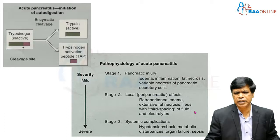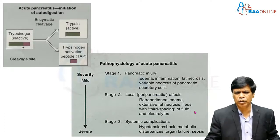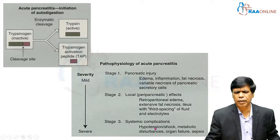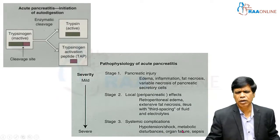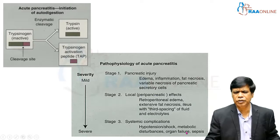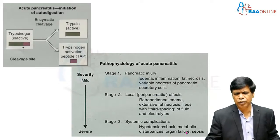There is sequestration of fluid within the third space leading to decreased effective circulating volume, dehydration, and poor organ perfusion — leading to Stage 3, which is systemic remote complications manifesting as hypotension, shock, metabolic acidosis, hyperglycemia, hypocalcemia, hypomagnesemia, and organ failure. Of these, renal, respiratory, and circulatory failures are of profound importance.